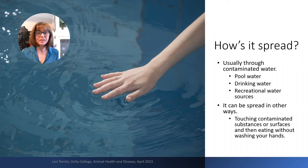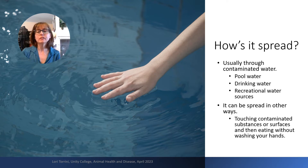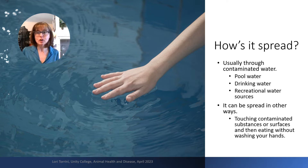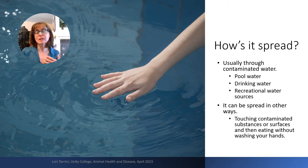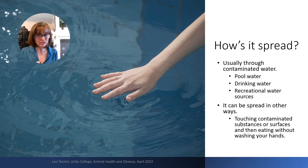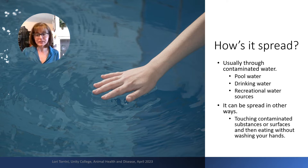How is it spread? It is usually spread through contaminated water. This could be pool water, lake water, river water, stream water, puddles of water, drinking water, or any recreational water sources that you're nearby. It can be spread in other ways too, like by touching contaminated substances or contaminated surfaces and then not washing your hands and then eating. So we want to be really careful about that.